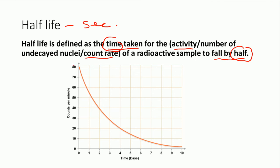The way to find the half-life is to take any number on the y-axis — here we're going to take the initial number 80 — and what you do is halve it, divide that number by two. Then you go along to the line and down, and you work out what the time difference is. In this case it's two days, and that time is the half-life of your radioactive sample. Half-life is usually denoted as t-half.